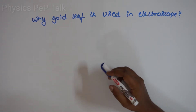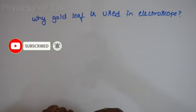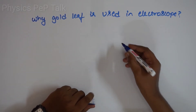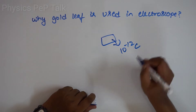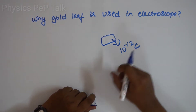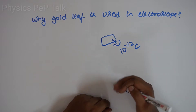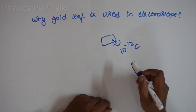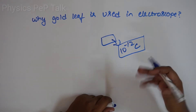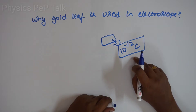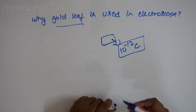Why is gold leaf used in electroscope? In place of gold, if you use aluminum leaf, and the charge on a charged body is of the order of 10⁻¹² coulomb, the aluminum leaf will not deflect because the sensitivity is too low. The sensitivity is the ability to detect a small variation. The sensitivity of such a device using gold leaf is high.